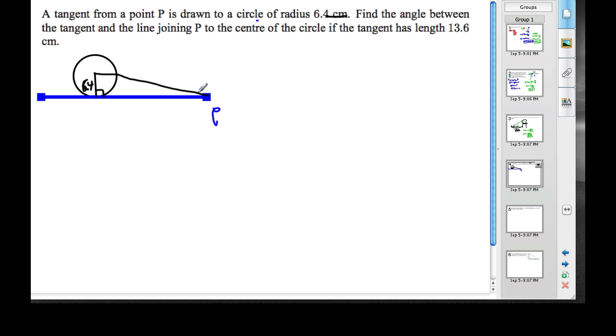This should be a straight hypotenuse. So we want to find the angle of the tangent and the line. That's this angle here. If the tangent has a length of 13.6. So this is 13.6.